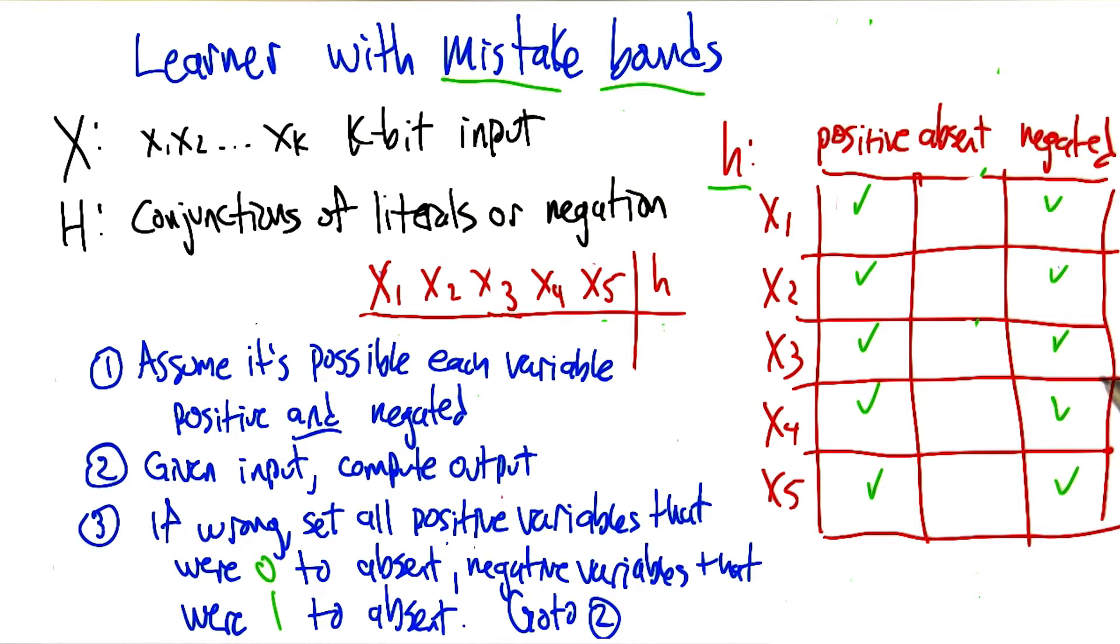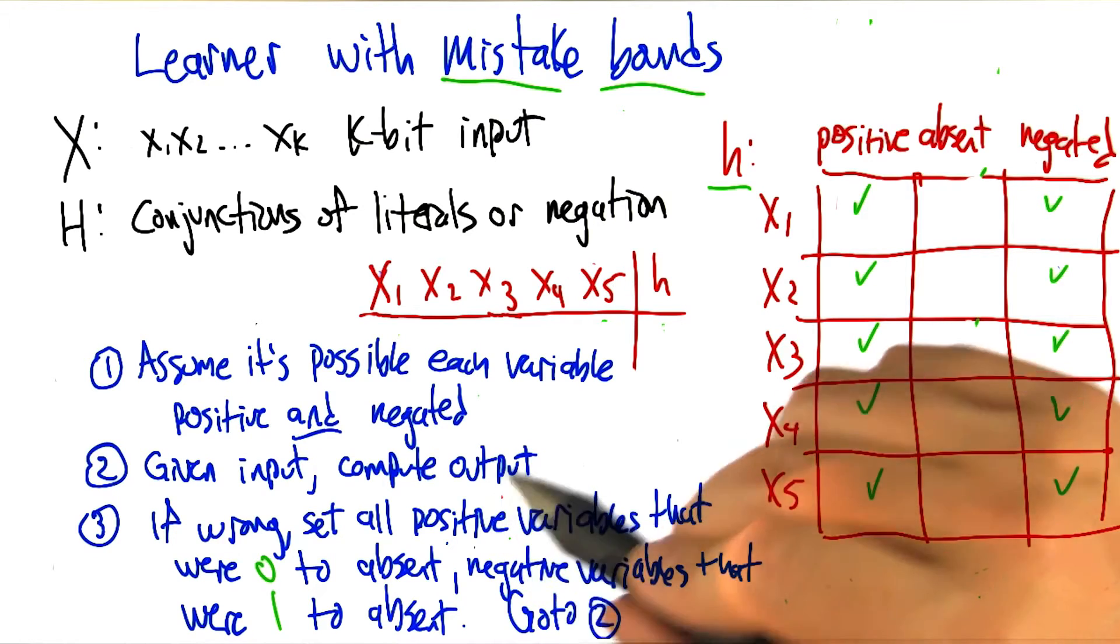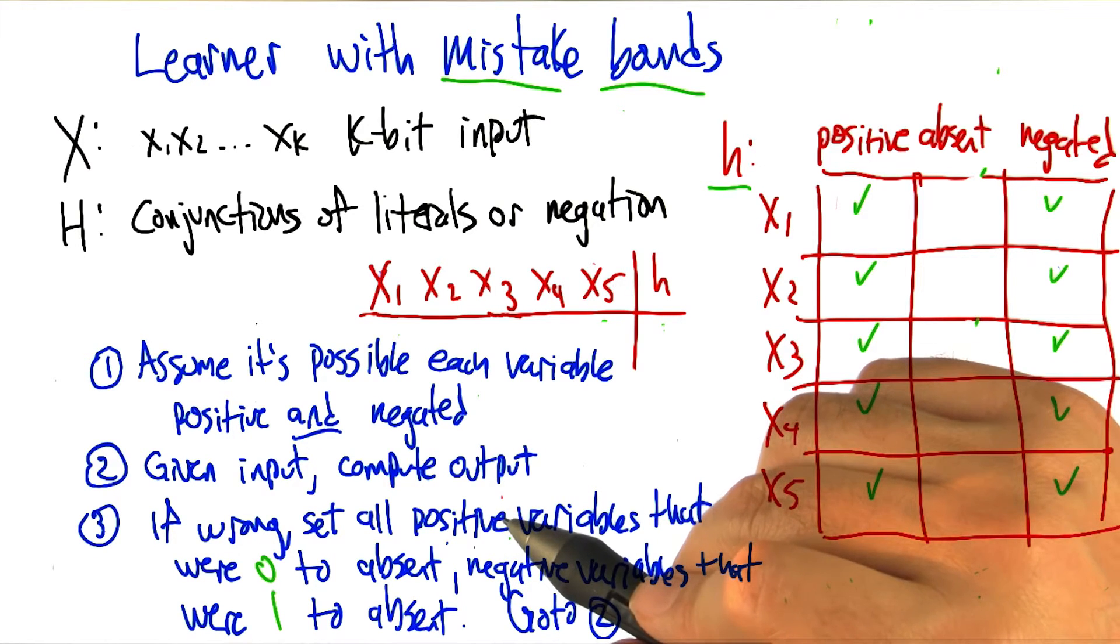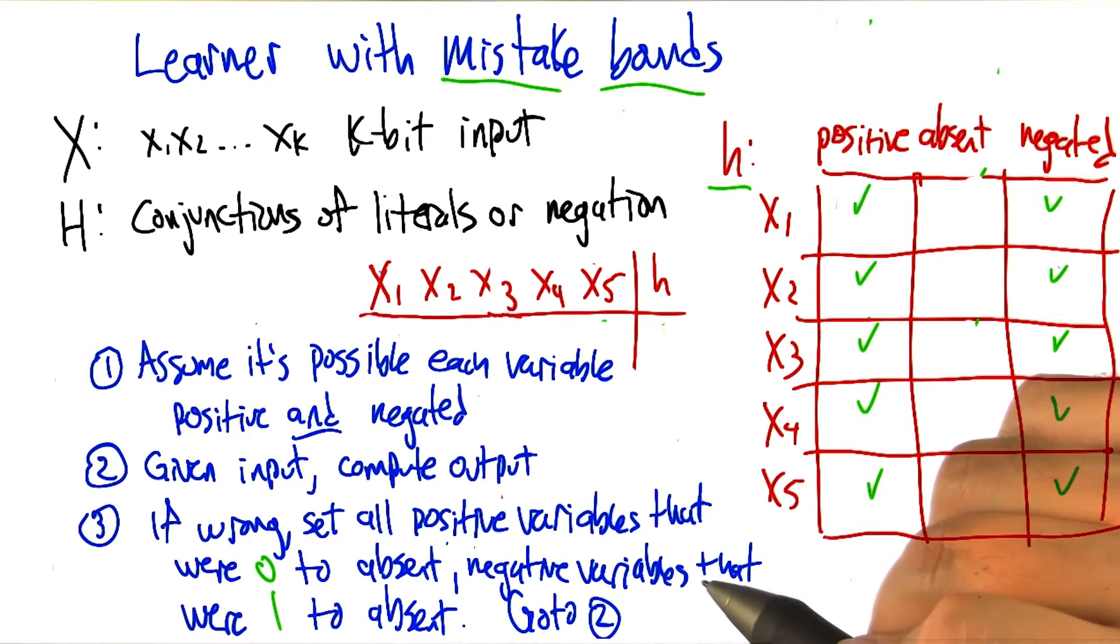Until, at some point, it actually could be right. Each time it's right, it's actually not getting charged any mistakes for that. It's just that at some point, it's going to get an input that the correct answer is true, it's going to say false and it's going to have made a mistake.